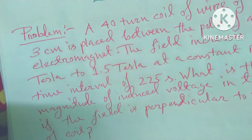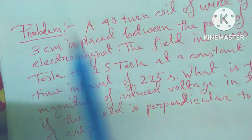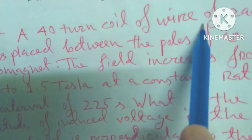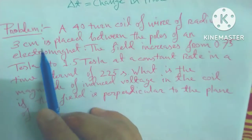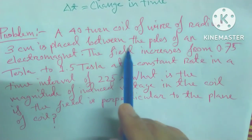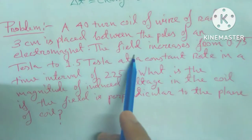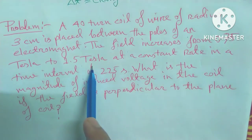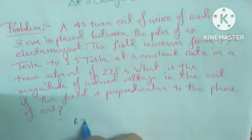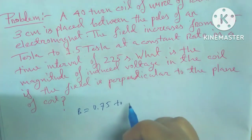A 40-turn coil of wire of radius 3 centimeter is placed between the poles of an electromagnet. The field increases from 0.75 to 1.5 Tesla.